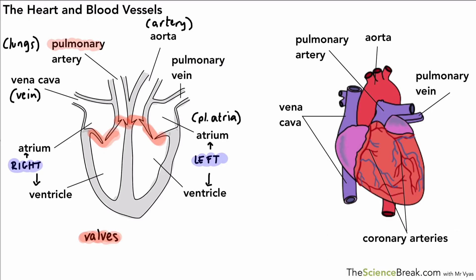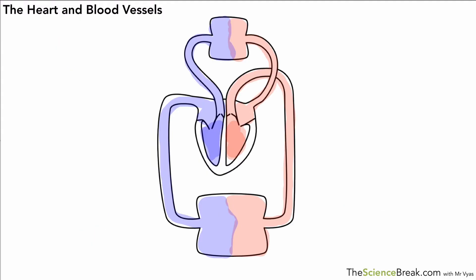One other label is the coronary arteries — these are the arteries that actually supply blood to the heart itself, so it can have its oxygen, glucose, and nutrients in order to pump. If we have coronary heart disease, it's those arteries that are affected, not the main ones that travel through the heart.